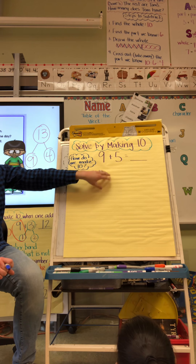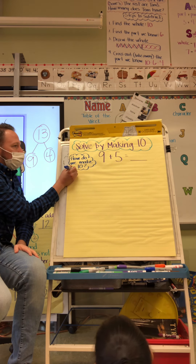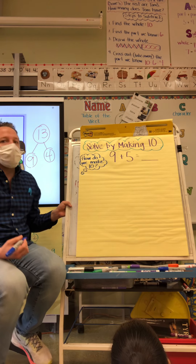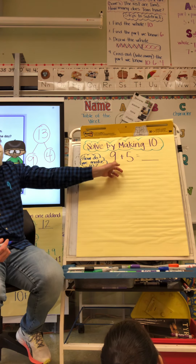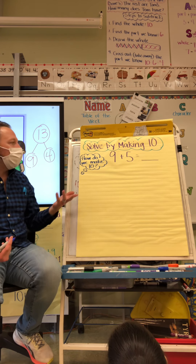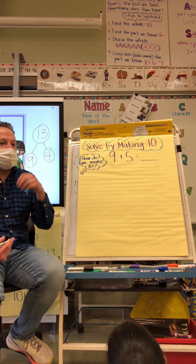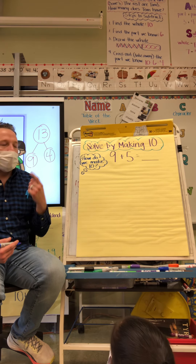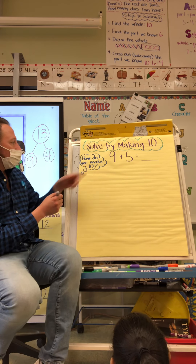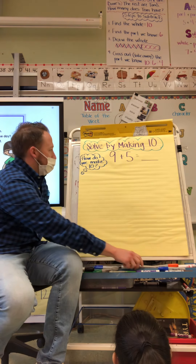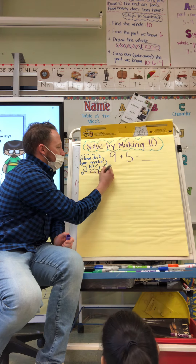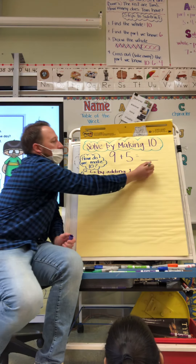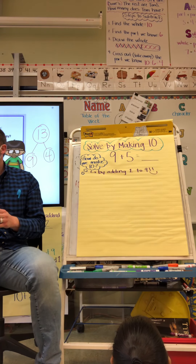We're looking to solve by making a nine, and we already said there's no ten in this problem. So we need to ask ourselves: how do we make ten? Looking at these two numbers and adding, which number is closest to ten — five or nine? Nine is closer to ten. How many more do I need to add to nine to make ten? I already have nine. One! Okay, so how do I make ten? I make ten by adding one to nine.